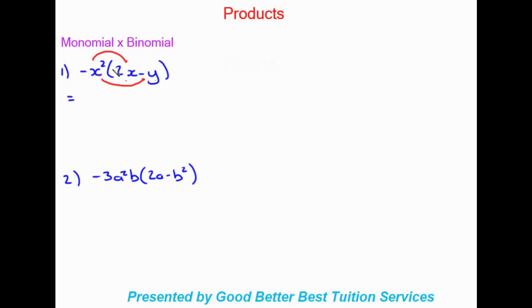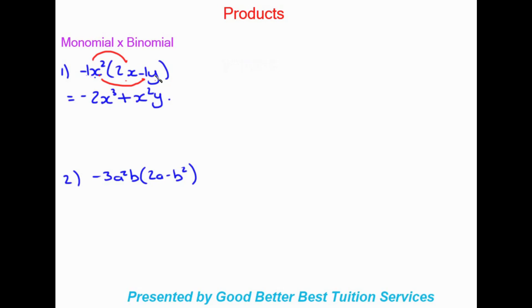We're multiplying negative x squared into 2x. First we times the numbers: there's a negative 1 in front of the x squared, so negative 1 times 2 gives negative 2. Then x squared times x gives x to the power of 3 — remember, when multiplying two bases that are the same, we add exponents. Then we times the monomial into the second term: negative 1 times negative 1 gives positive 1, and x squared times y gives x squared y as our final answer.